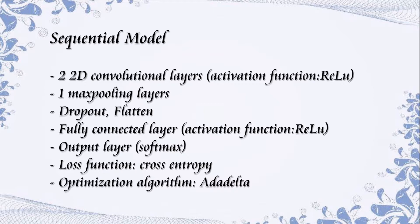The four classes are rock, paper, scissors, and nothing. We adopt softmax as the activation function of the output layer, while other layers use ELU as their activation function. The loss function in our model is cross-entropy.